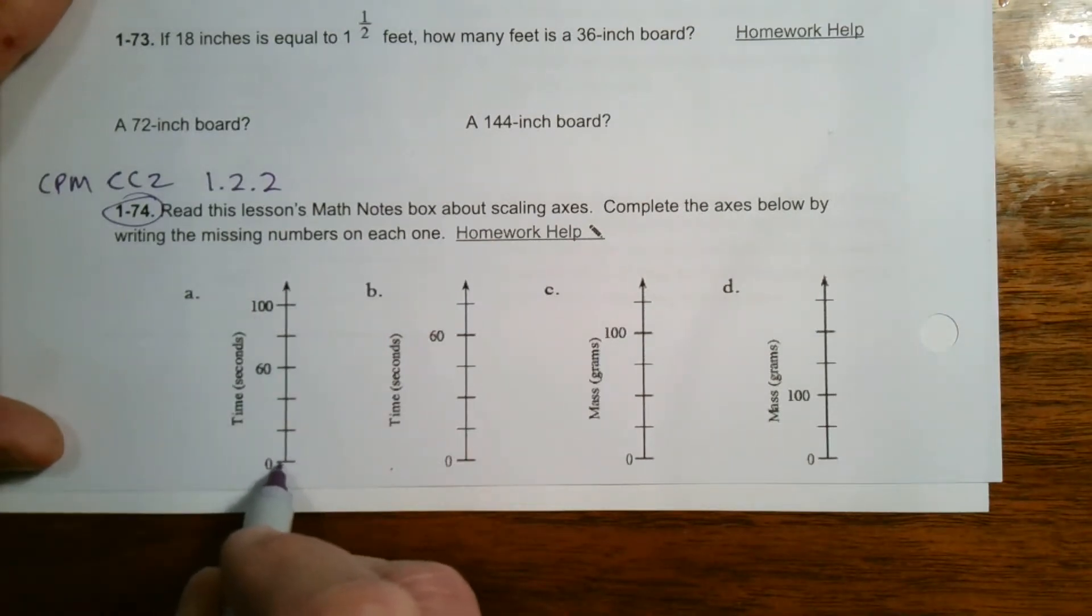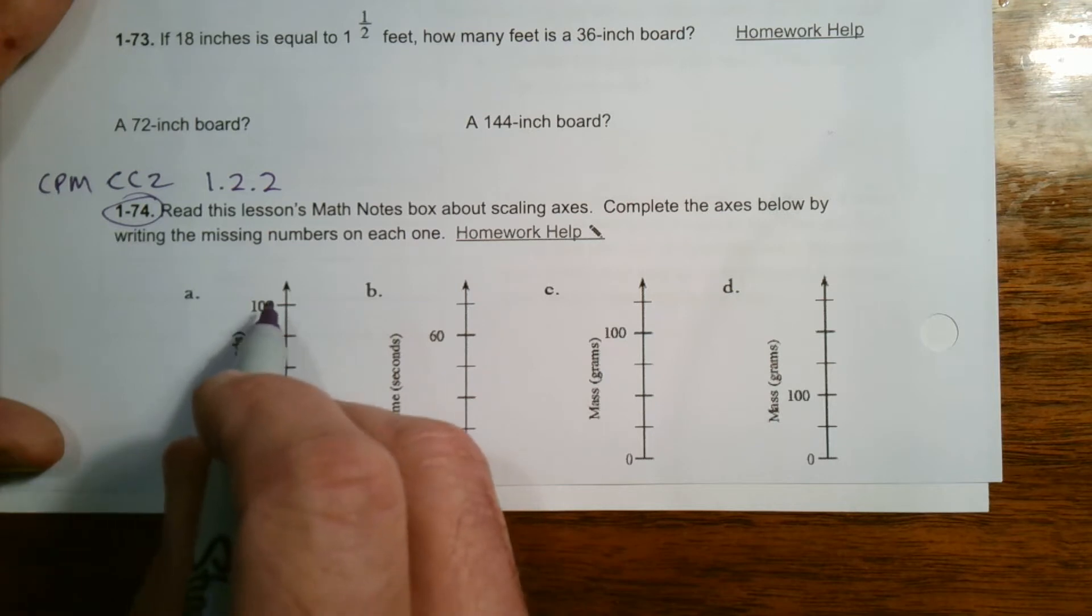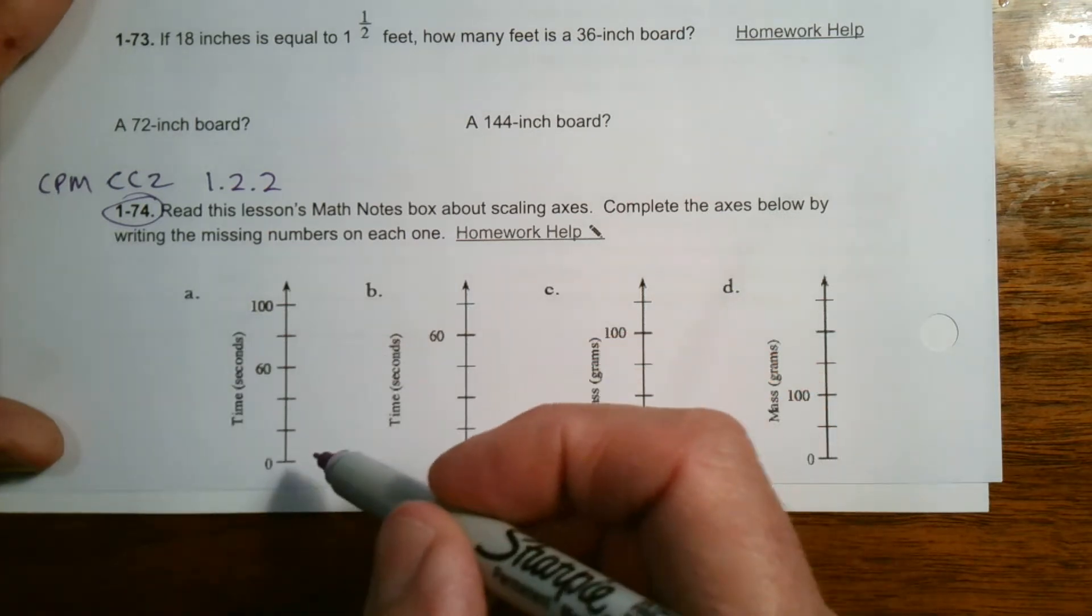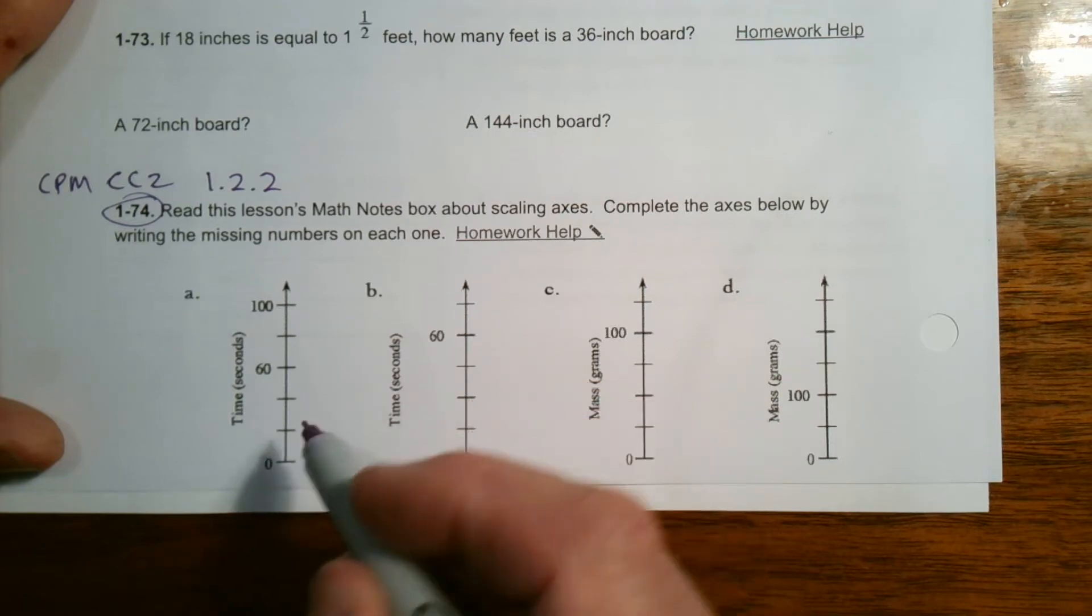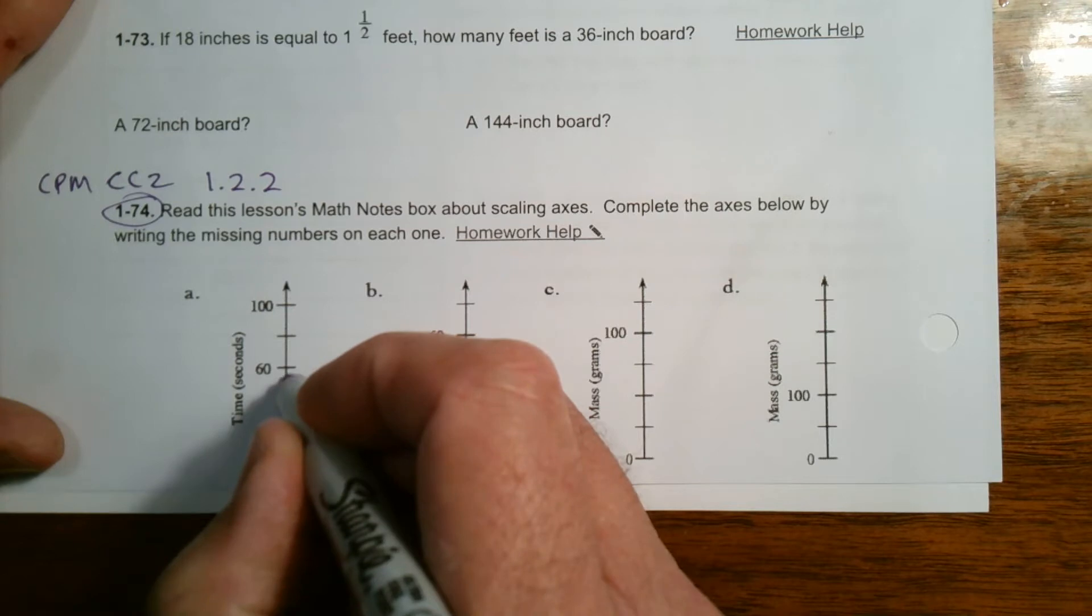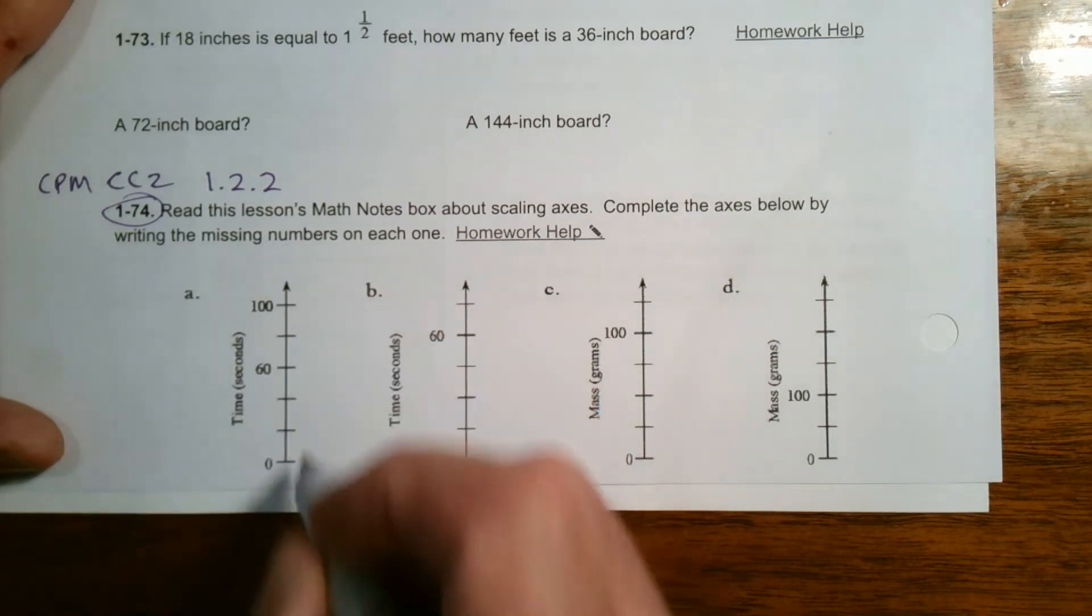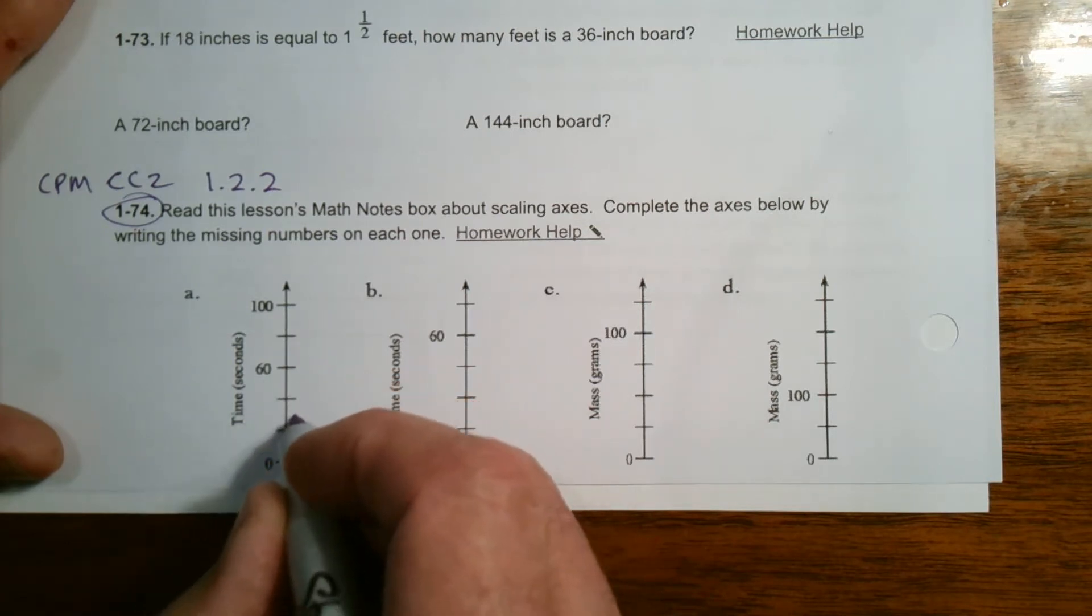So this scale starts at zero, but we notice it goes up and up again, and then it hits 60, then goes up again and hits 100. We're looking to see what is the distance that we need at equal distance. Each of these spaces in between the tick marks need to be equal in length. If it's from here to here is 60, I usually count how many of these are there. There's one, two, three.